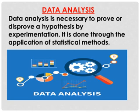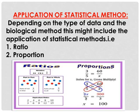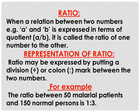The second topic is data analysis. It is very necessary to prove or disprove a hypothesis by experimentation. This is done through the application of statistical methods. Depending on the type of data and biological method, this might include the application of statistical methods — that is, ratio and proportion. First is ratio: when a relation between two numbers like a and b is expressed.